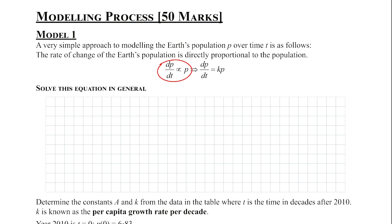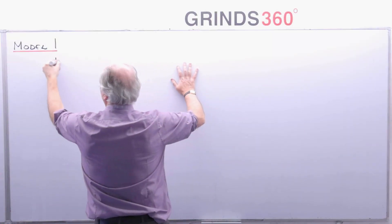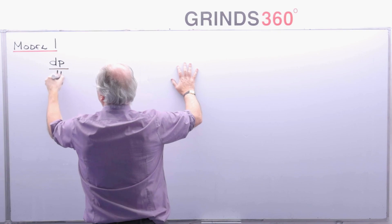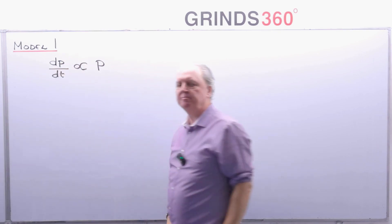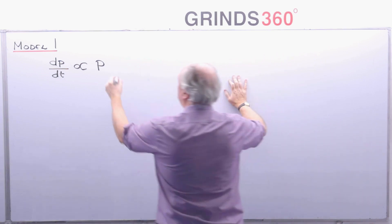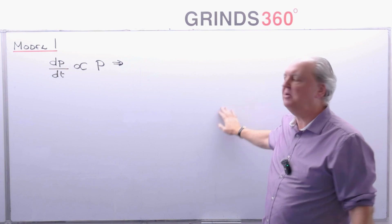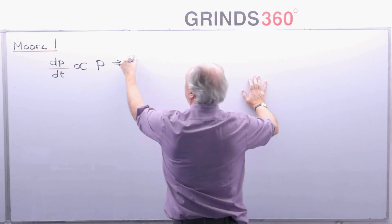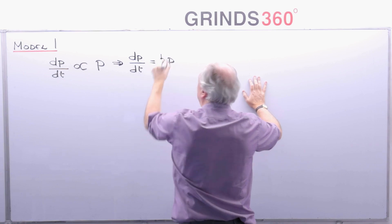We're going to start off by solving that differential equation in general. So what I'm saying is the rate of change of the population dp/dt is directly proportional to the existing population. And as you know if something is directly proportional to something you can make it equal by putting in a constant of proportionality and that constant we call k.